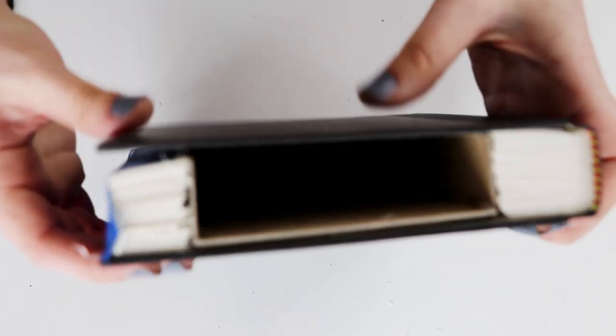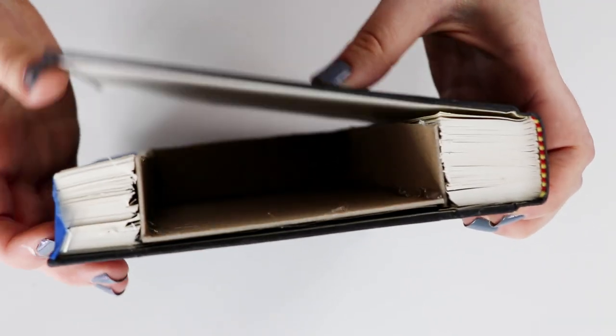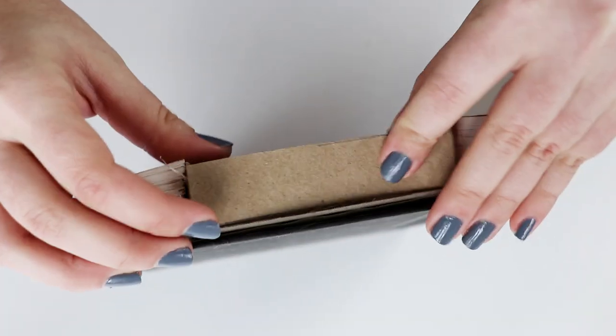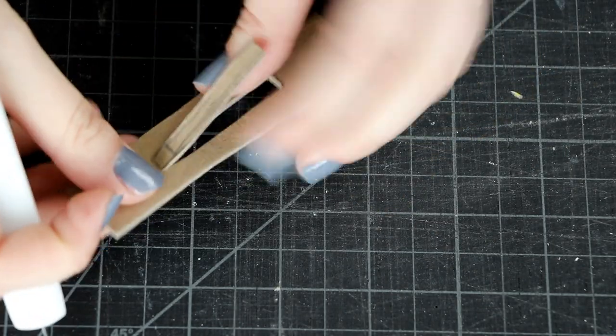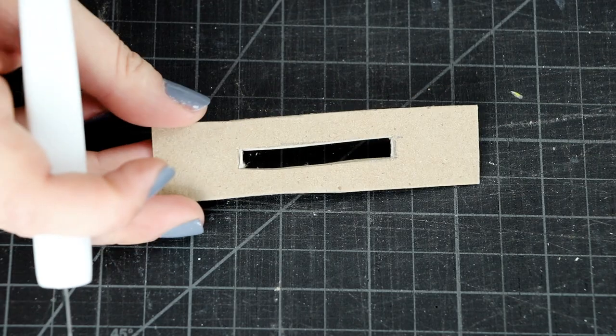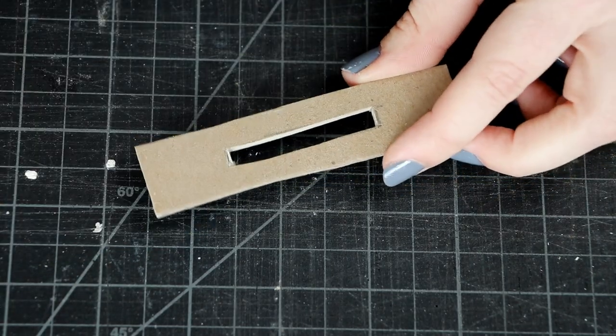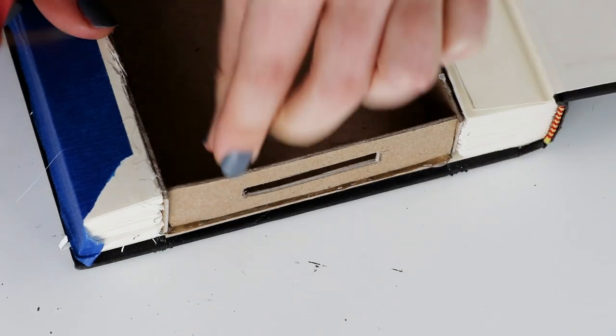Now our bank is coming along, but it's missing a top. Cut another piece of cardboard to fit on the top of the book and just like before, draw a rectangle in the middle. Cut that out to make a slot for your coins and then glue it into place on the top of the book.